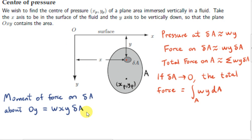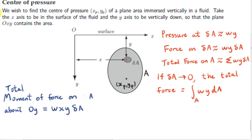Summing these quantities — using sigma notation — and letting delta A go to zero, we replace delta A with dA and the summation sign becomes an integral sign. So the total moment of the force on the entire area A about the y-axis is the integral of Wxy dA.